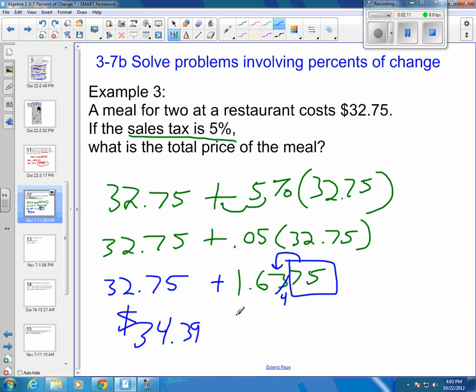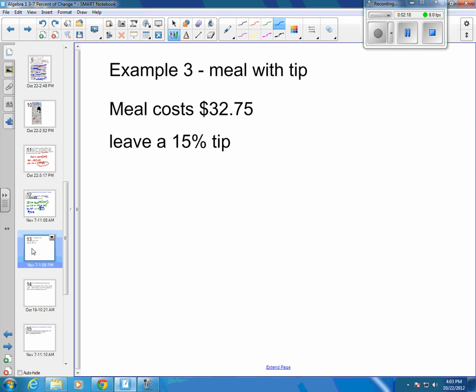That's how much total you have to pay with the cost of the food and the 5% sales tax. So our next example here, we're going to buy another meal, and we're going to pay $32.75. We're going to say the tax is already on there, but we want to leave a 15% tip, and I'm going to show you two different ways to do this.